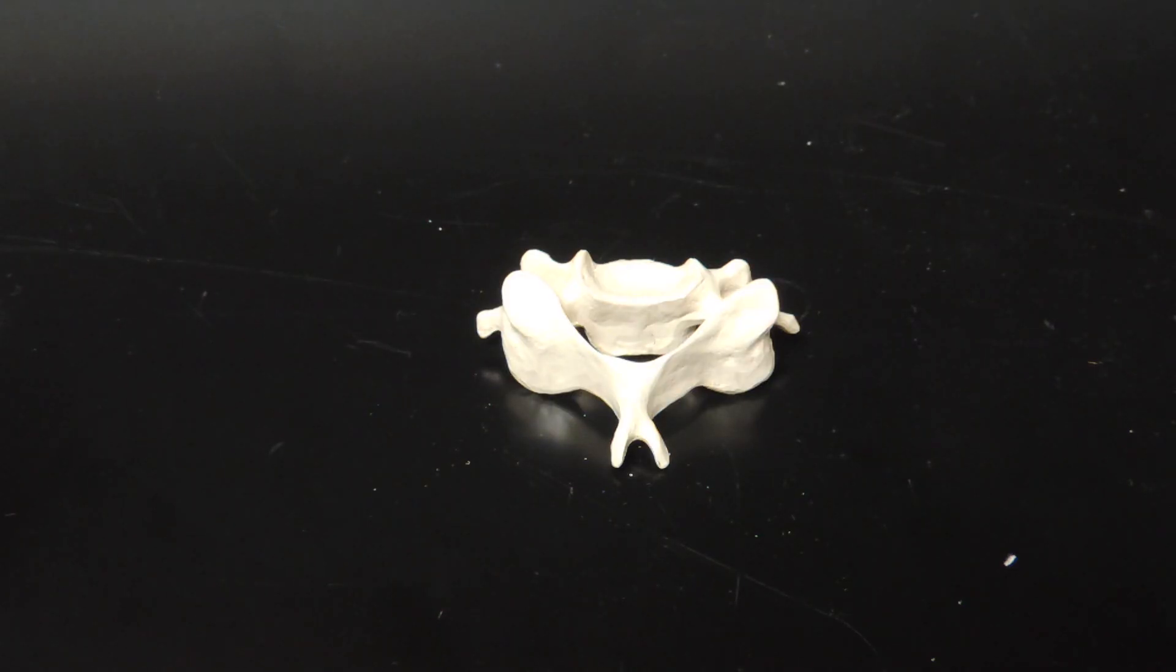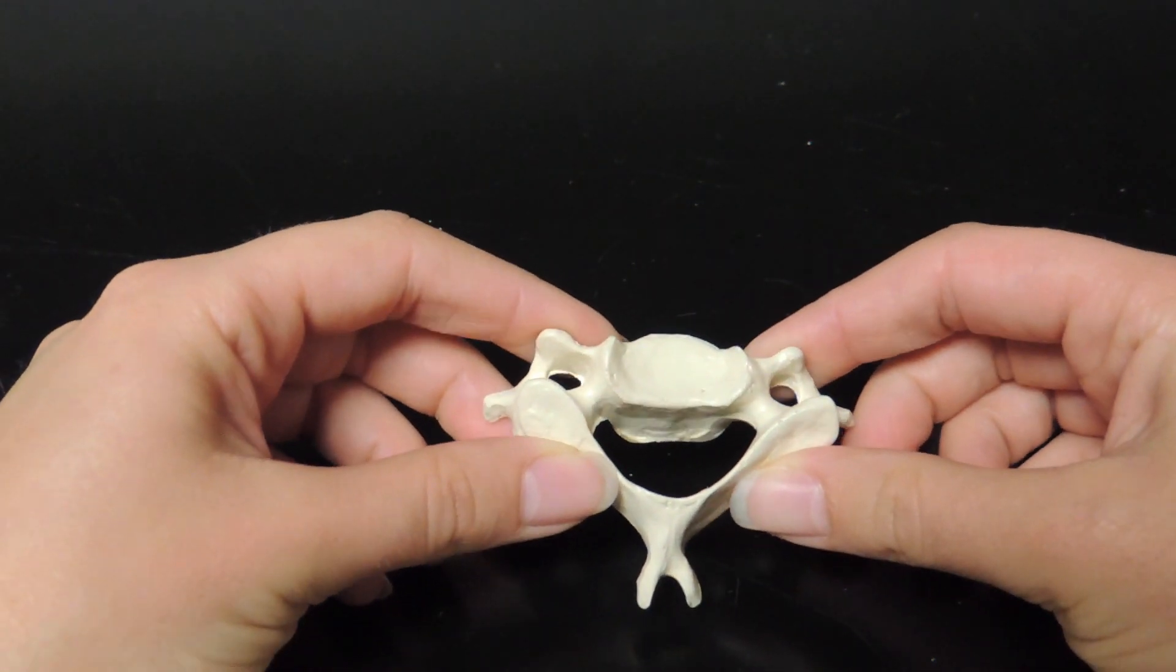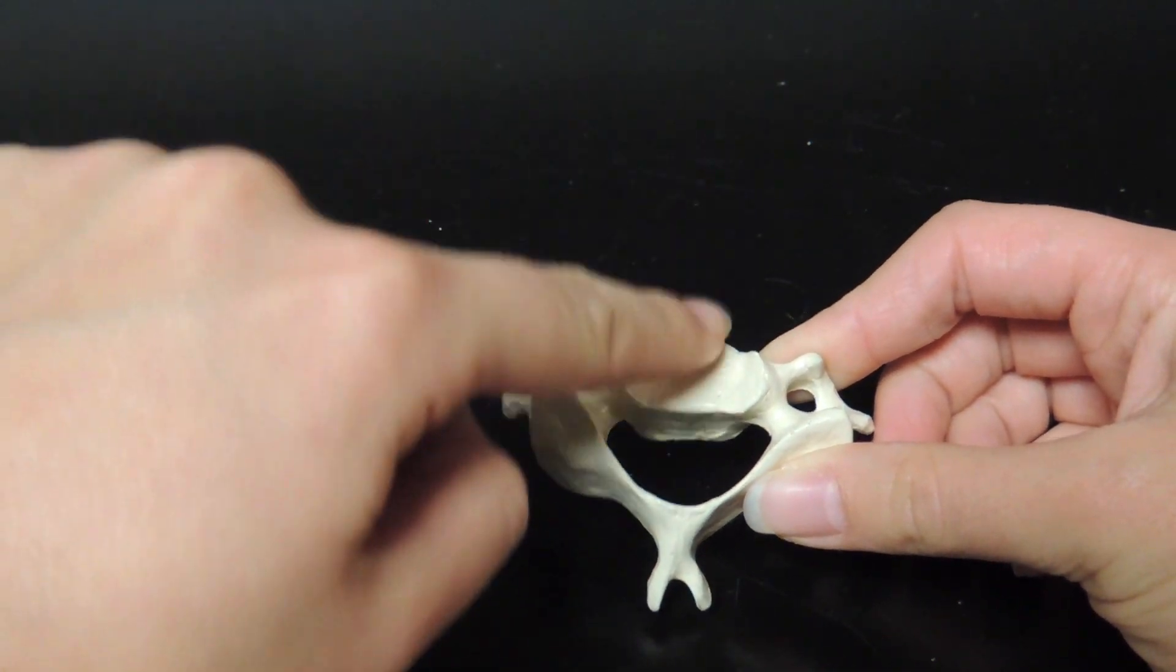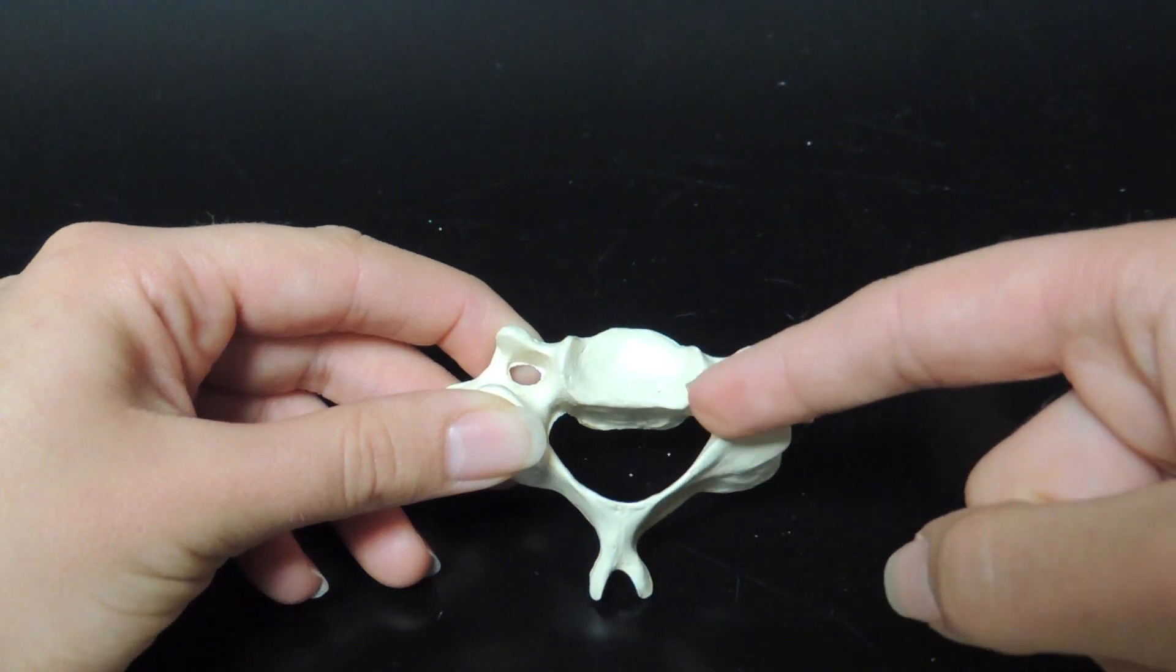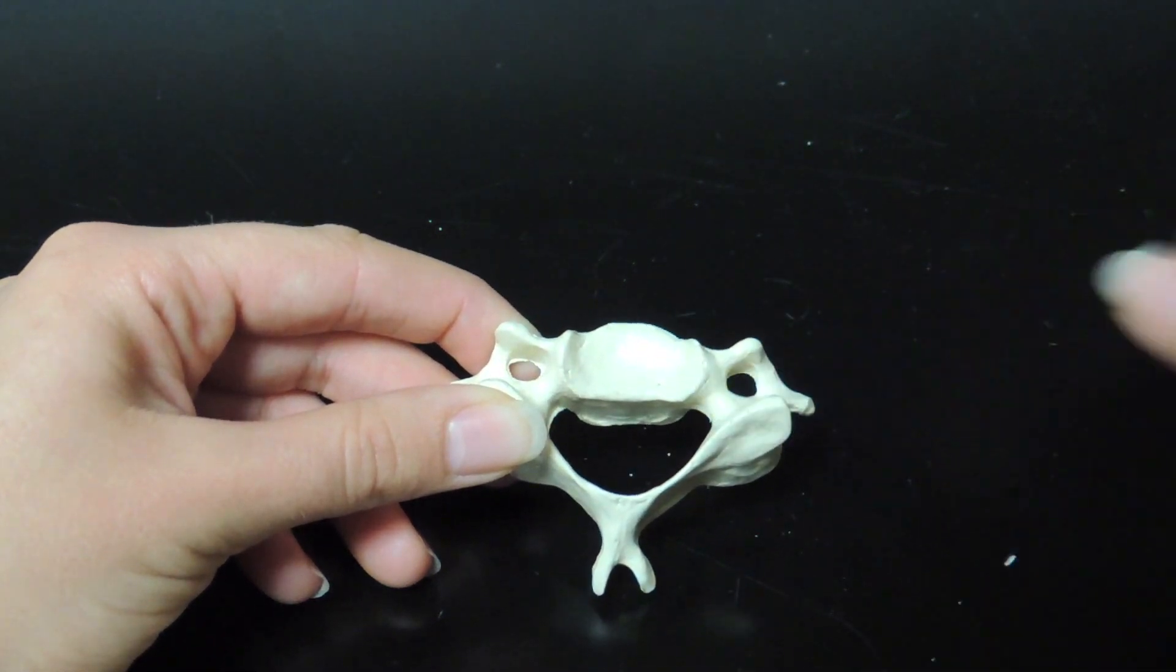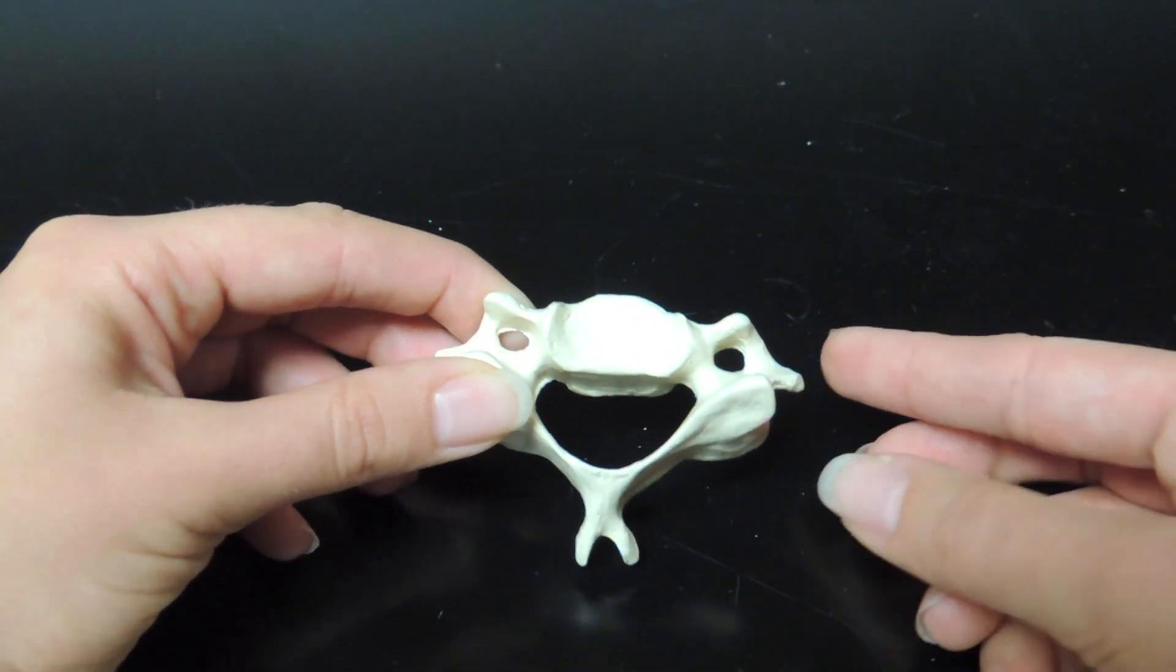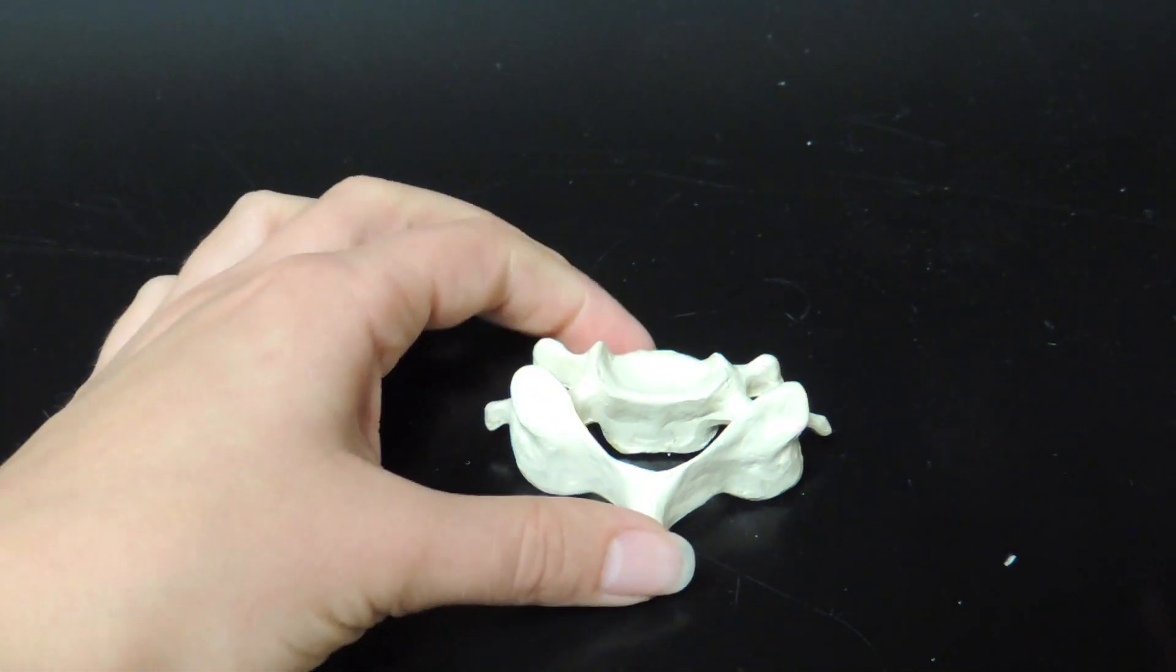The rest of the seven cervical vertebrae look something like this. The common features are the body, the vertebral arch, the vertebral foramen, the transverse processes which are here and here, and the pedicles.